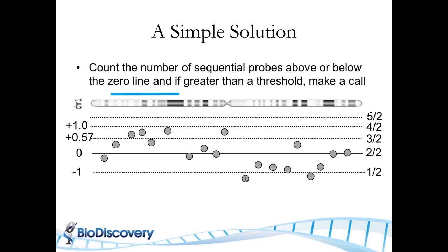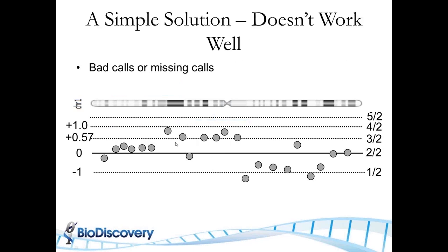It's not the best method because it can make bad calls. In a case like here, you have five probes that are slightly above zero, just by 0.1, and that becomes a gain. And in this case, because you have an outlier, you never get five probes in a row, and this potentially real gain will not be called.